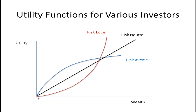The risk-lover actually gets more and more satisfaction as their wealth level increases from an additional dollar. If they go from $2 to $3, they get a small increase in utility. But when they go from $100,000 to $100,001, they actually get a bigger increase in utility. These are people who are going to like to gamble.